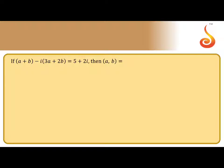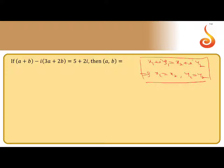So now, two complex numbers are equal means basically x1 plus iy1 equals x2 plus iy2. This implies x1 equals x2 and y1 equals y2. So two complex numbers are equal means the corresponding real and imaginary parts are equal. So now we can follow that rule here.